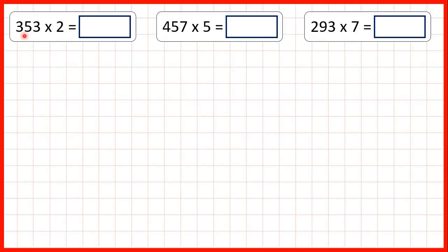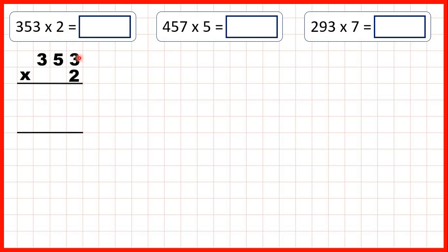Now we need to multiply a three-digit number by a single-digit number and we're going to use the expanded column method. First, we have 353 times 2. So we can write our question out with the larger number, or the number with the most digits, on top, but this time we're going to need three answer lines.